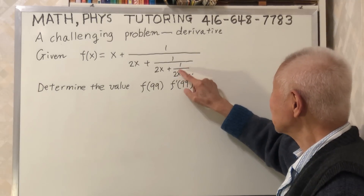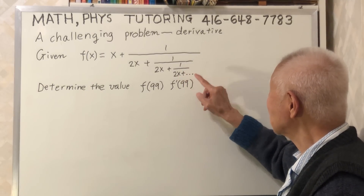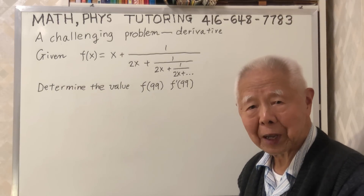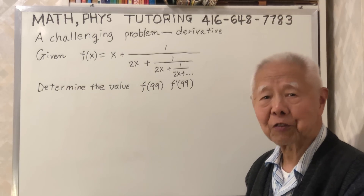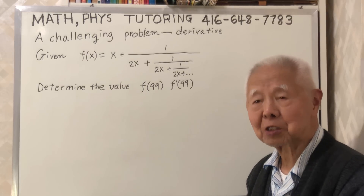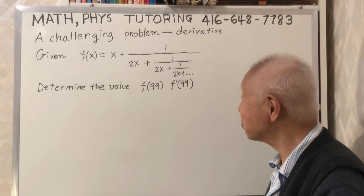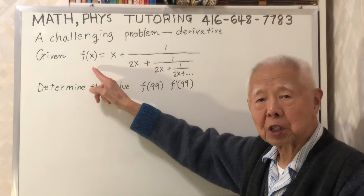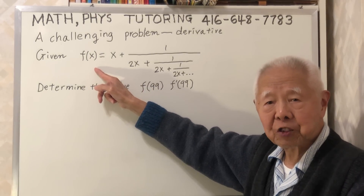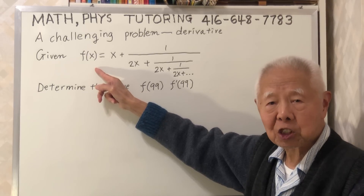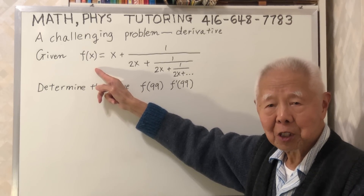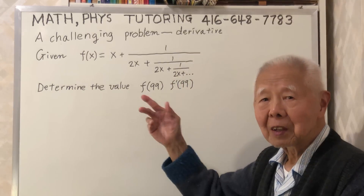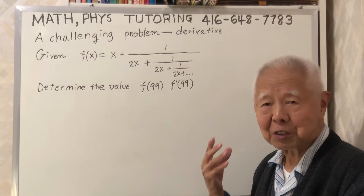Since the fraction continues indefinitely, I cannot easily find the value when x equals 99 — it's very difficult. Similarly, to find the derivative, I must differentiate this expression and then replace x by 99, which is again very difficult because this expression is indefinitely long.